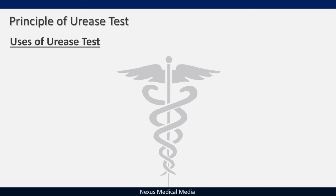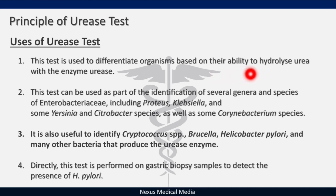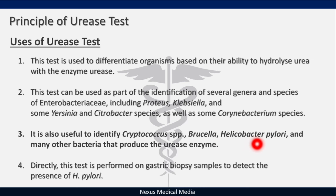The urease test is used to differentiate organisms based on their ability to hydrolyze urea. It can be used for identification of several genera and species of Enterobacteriaceae, including Proteus, Klebsiella, some Yersinia and Citrobacter species, as well as Corynebacterium species. It is also useful to identify Cryptococcus species, Brucella, H. pylori, and many other urease-producing bacteria. The test is also performed directly on gastric biopsy samples to detect H. pylori.